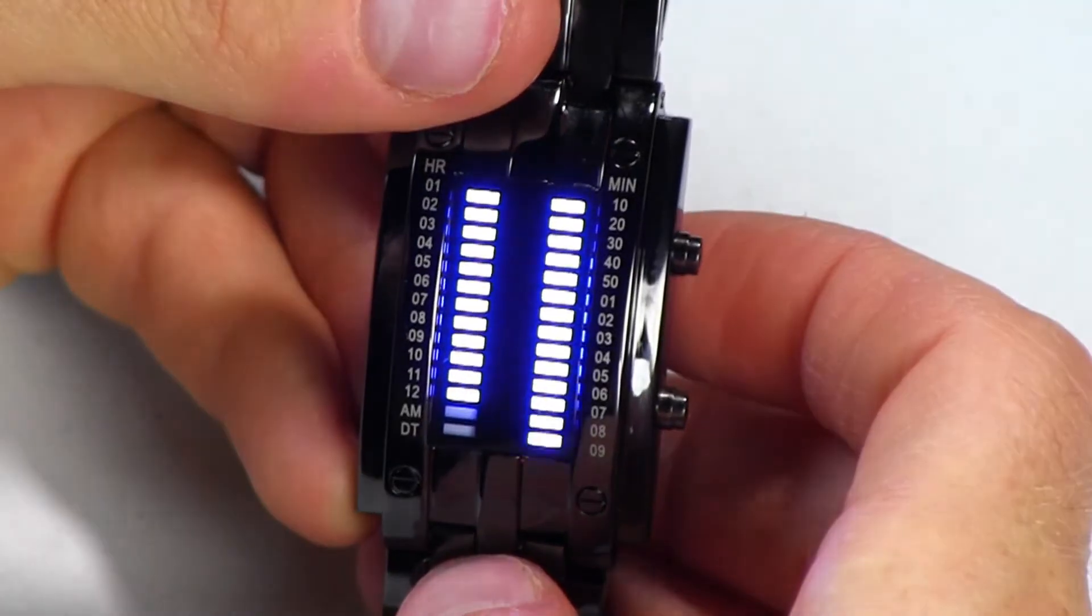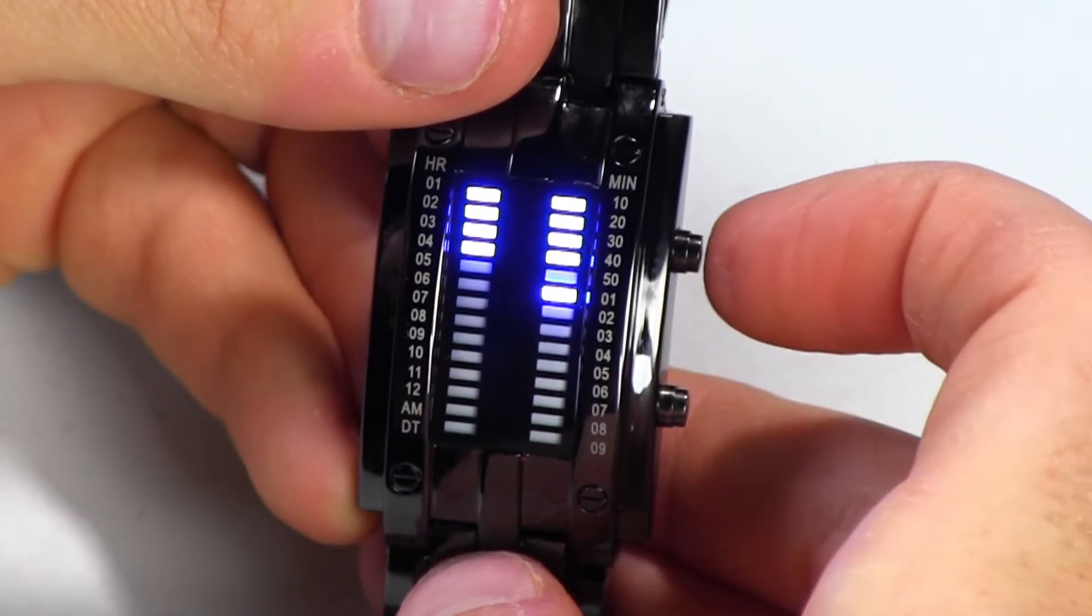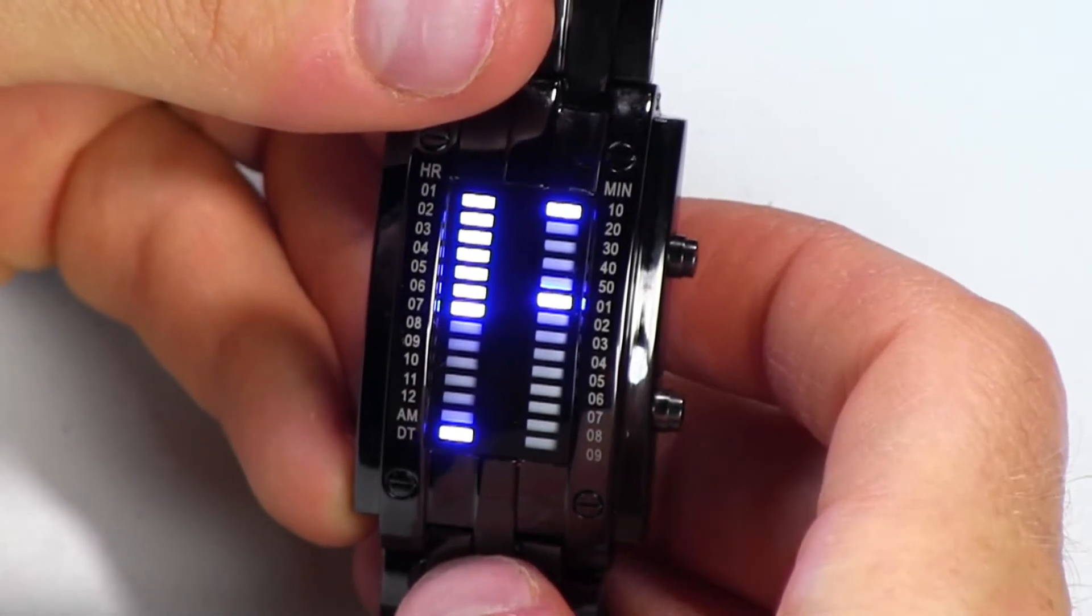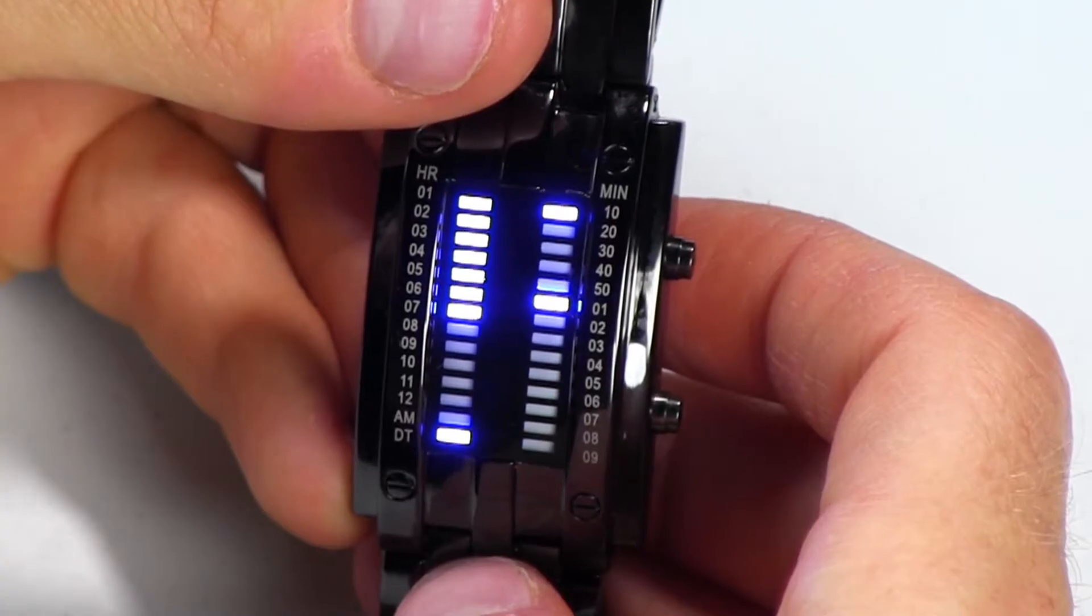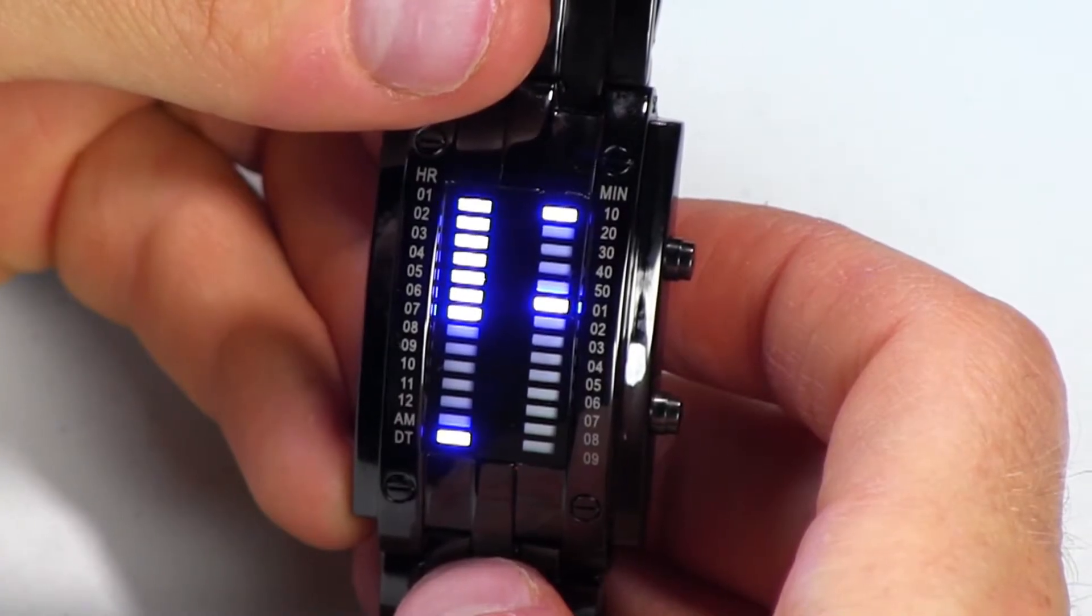I'm going to hit the top button once and it's going to show us what time it is. If I hit it again, it's showing us the date. So I'm going to go through with you now how to read the time on the watch.